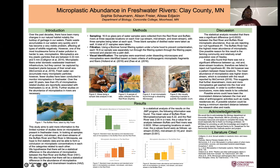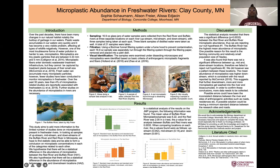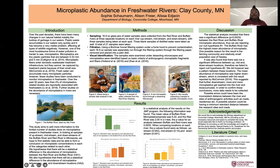Now onto our methods section. We divided our methods into three parts: sampling, filtration, and visual identification. For sampling, we collected 16-ounce jars of water samples from the Buffalo River and Red River at three different locations — upstream, midstream, and downstream — with three samples taken at each spot. We also added three blank samples of distilled water, making a total of 21 samples analyzed.